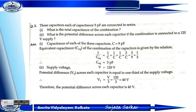Problem 2: Three capacitors, each of capacitance 9 picofarad, are connected in series. What is the total capacitance of the combination, and what is the potential difference across each capacitor if the combination is connected to a 120 volt supply? For series combination: 1/C = 1/C1 + 1/C2 + 1/C3.